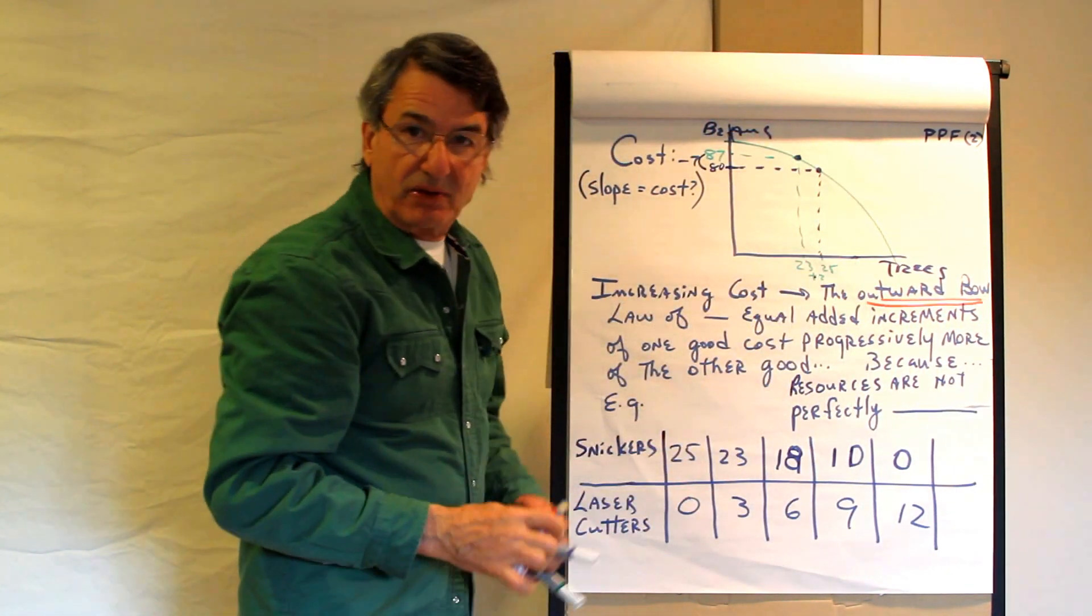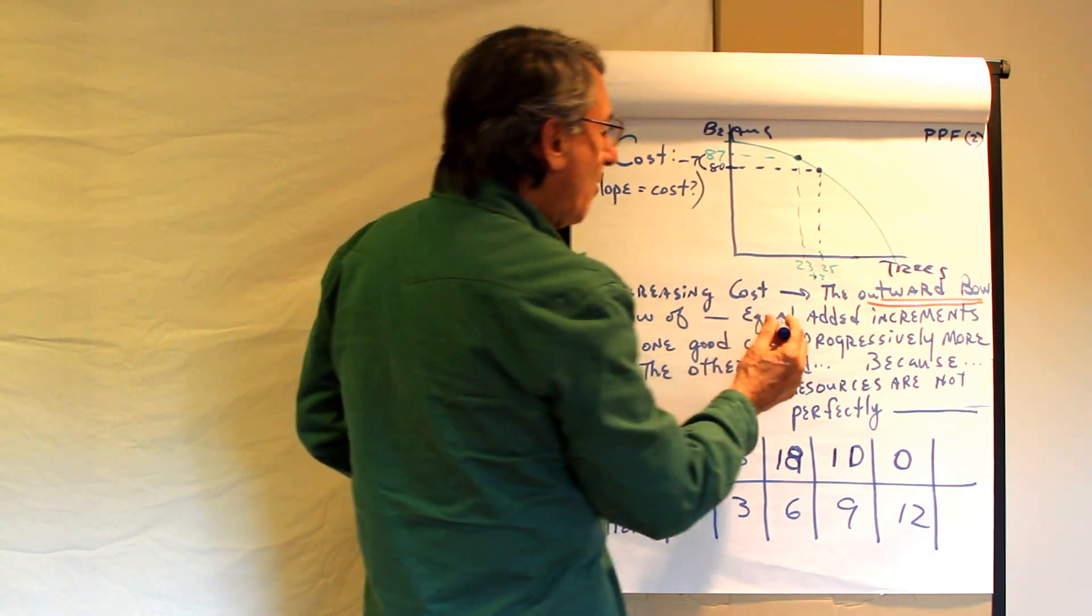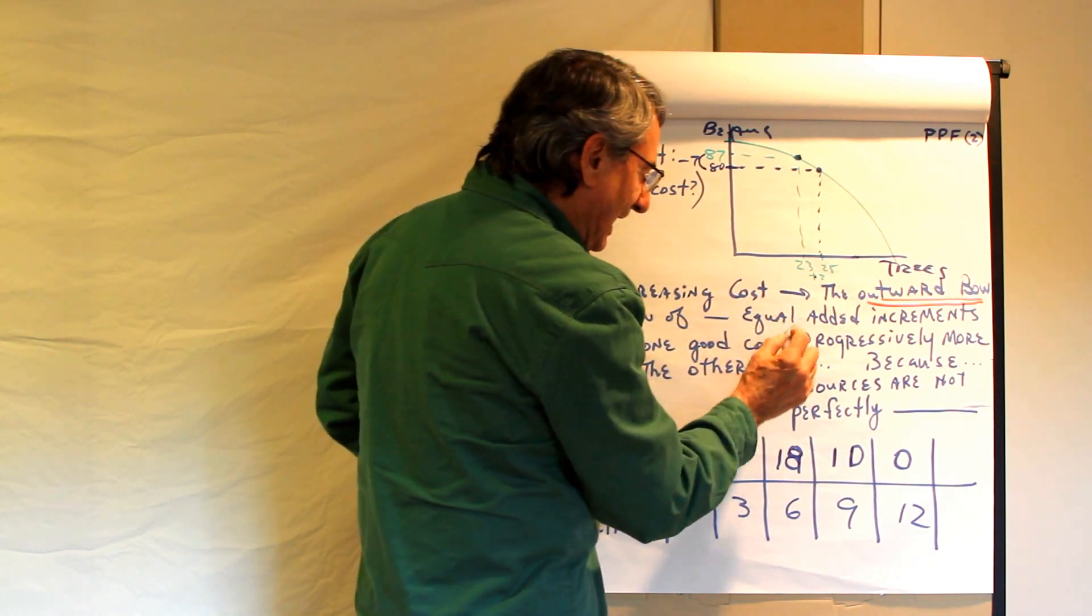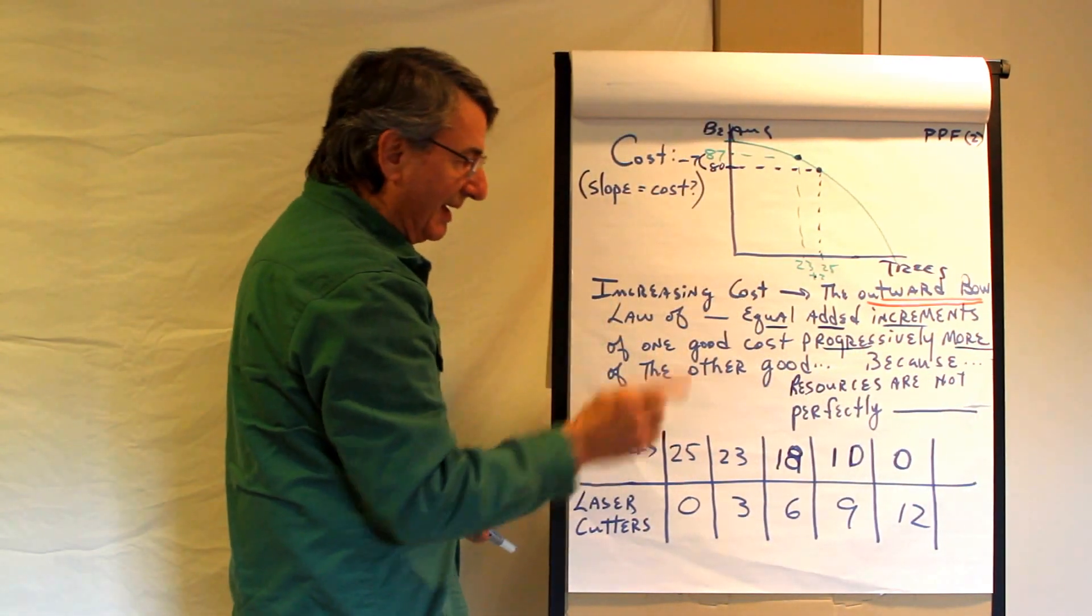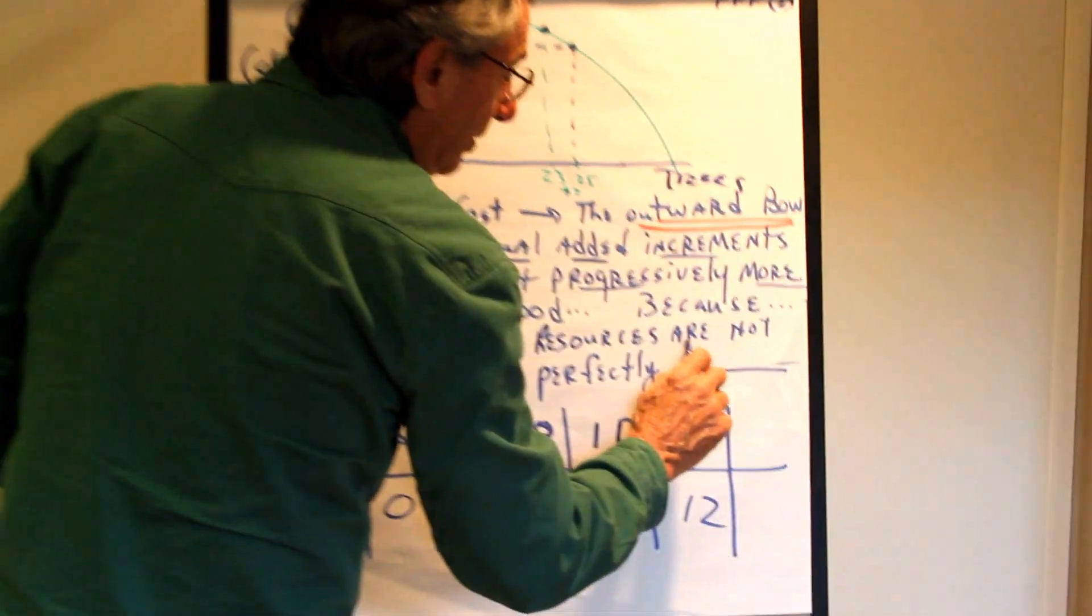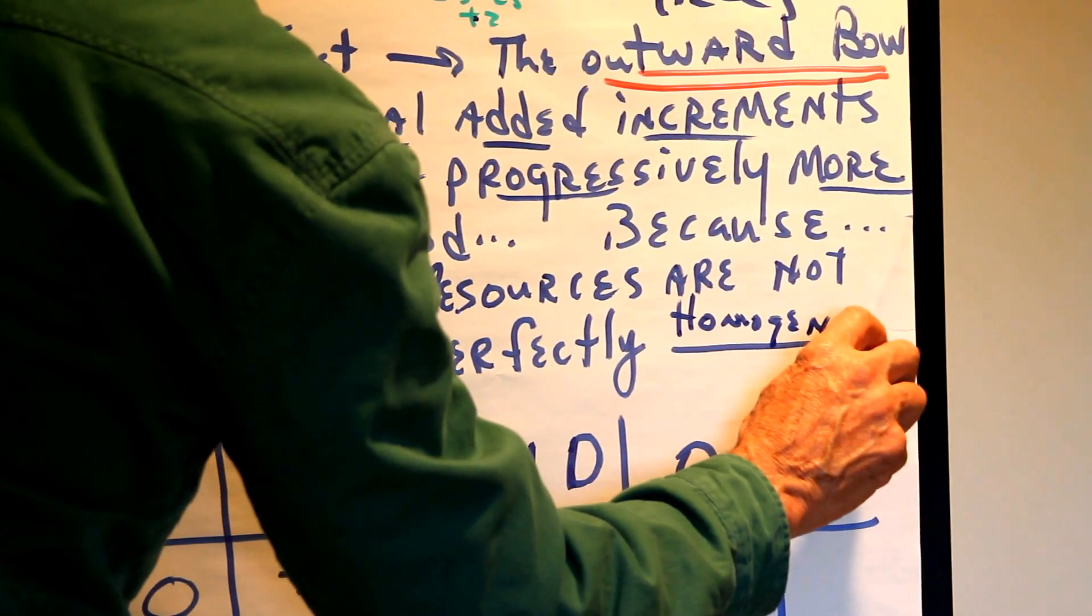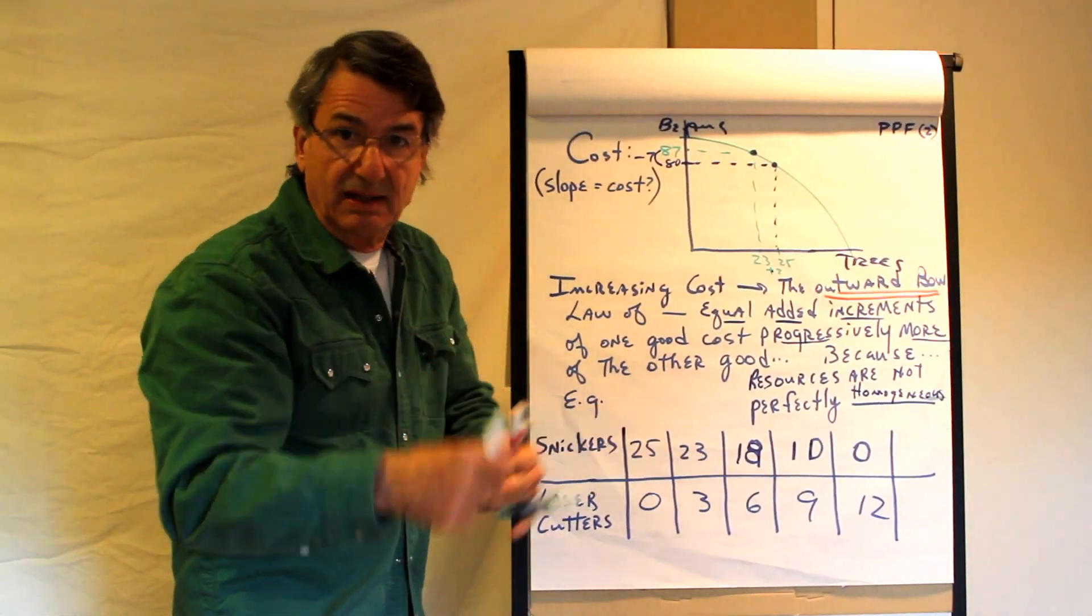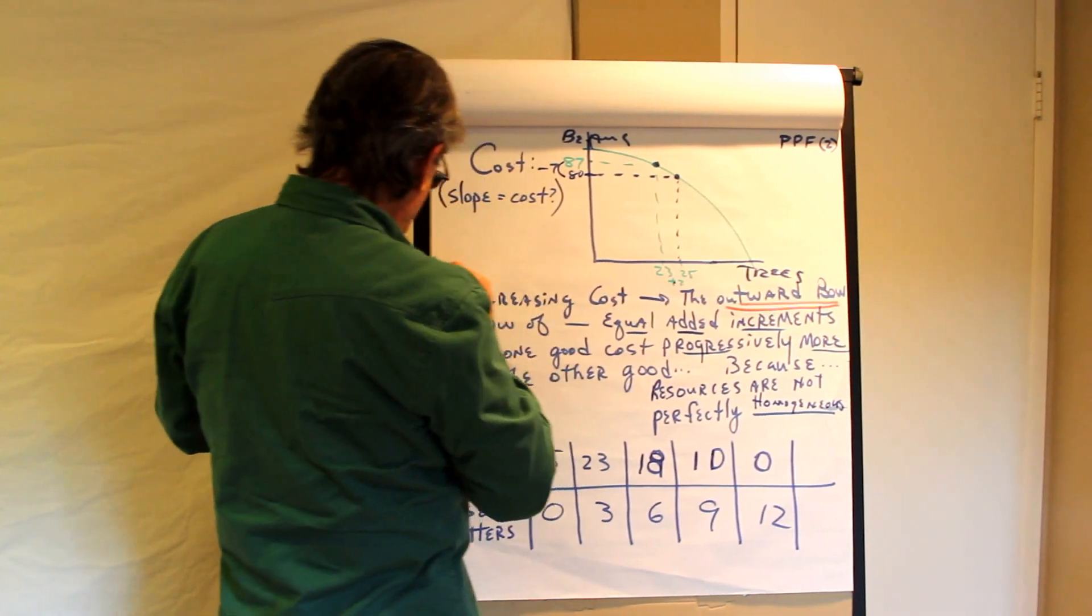The second thing is you'll notice that this graph is always drawn outward bowed. It has this outward bow. It's concave with respect to the origin. And what that means is that costs increase as you produce more and more of one good. There is something called the law of increasing costs. And it says equal added increments of one good cost progressively more of the other good. And the reason is because resources are not perfectly shiftable, that is, not homogeneous. Some resources are good at producing one thing but not another. And other resources are good at producing the other thing but not the first thing. People are that way. Machines are that way.